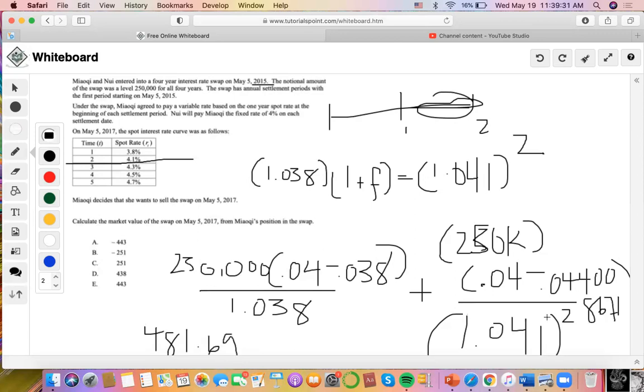This one is 0.04 minus 0.0504 times $250,000.